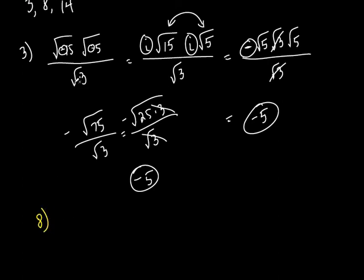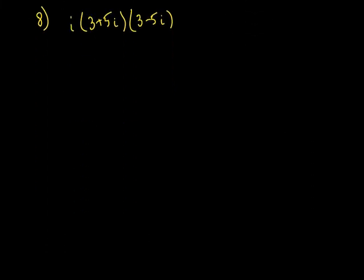Alright, number 8. Look at number 8 — you've got an i out in front, and you've got a couple of parentheses being multiplied together. When you see two parentheses, two sums being multiplied like this, the word is FOIL. But take a closer look — these two factors are the same except one is plus and one is minus. So what kind of special multiplication is it? It's a difference of two squares. That saves you a little work. I would not multiply by the i first — I would wait until the very end. It's way easier to take these two parentheses, figure out what that is, and then multiply by the i.